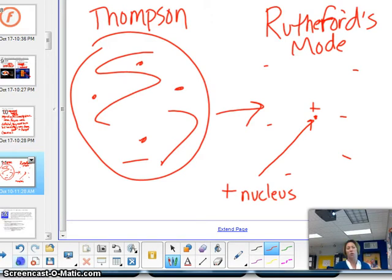We didn't really know how the electrons were around it, but we knew atoms were neutral. So if they have an area of positive charge, they had to have an area of negative charge.